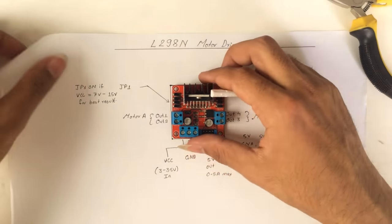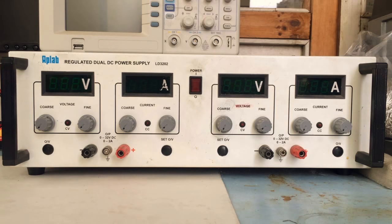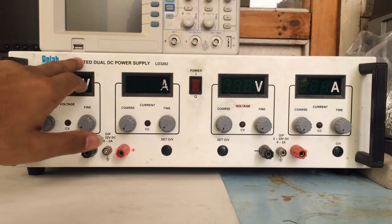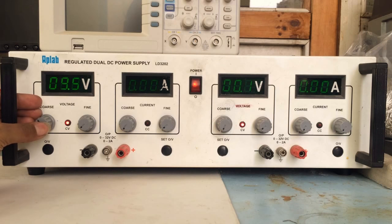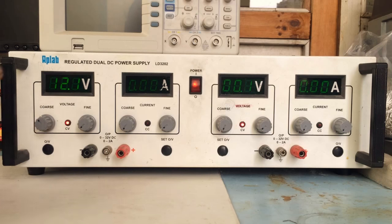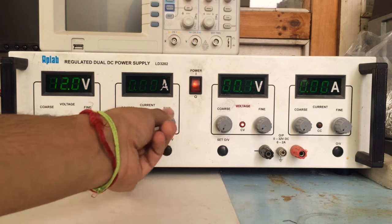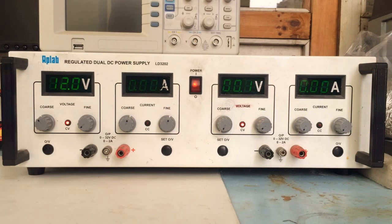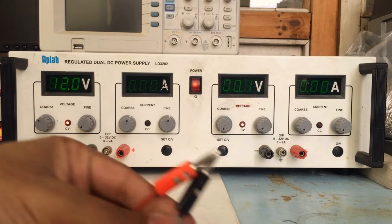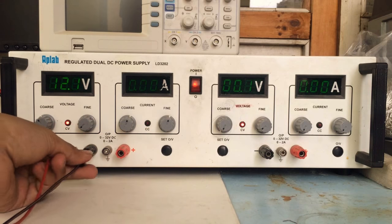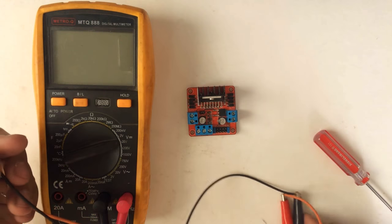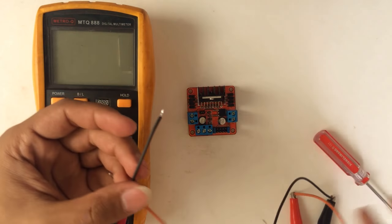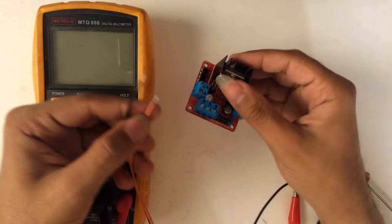For this test we'll be using our lab dual regulated power supply. We'll set our voltage to 12 volt. We have 12 volt and set our current around 500 to 1 ampere. Let's connect our probe, black goes to black and red goes to positive. We have our 12 volt power supply.